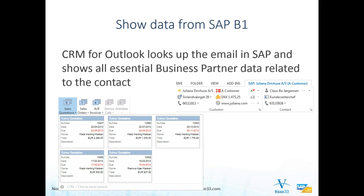You can see one of the functionalities — showing information. You can check the open documents related to that business partner, the business partner information such as the country, relevant information from reports, the contact information such as the contact person, telephone, fax, address, and the balance of that business partner.